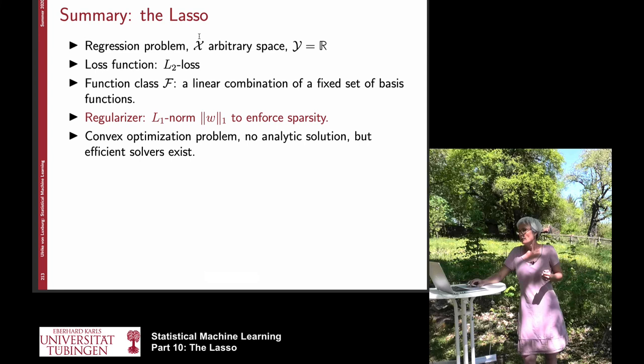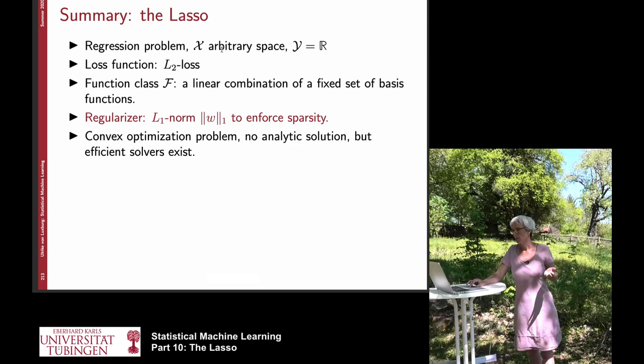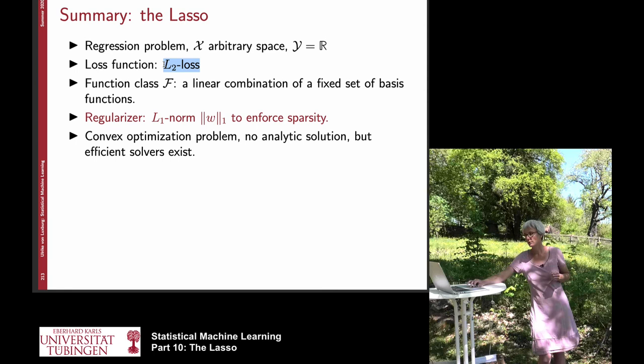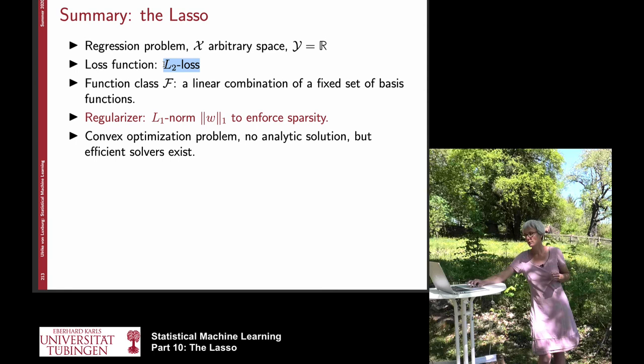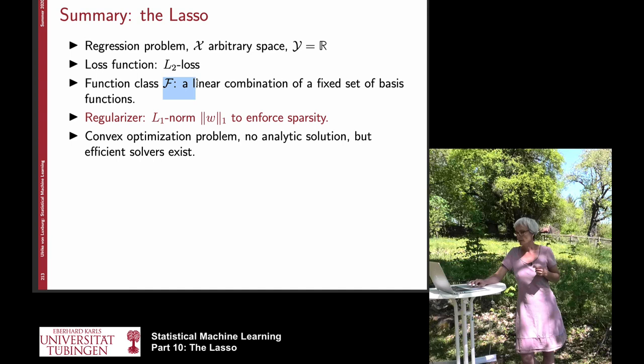In summary, for LASSO: we start with an arbitrary space; our output because we are in regression is real-valued; we need a feature representation that brings us to R^d; the loss function is still the L2 loss — don't be confused, it is only the regularizer that goes to L1; our function class is still linear functions; and the regularizer is now the L1 norm. As opposed to all other algorithms considered before, this is a convex optimization problem but there does not exist an analytic solution, so we need to solve it using a convex optimization solver.